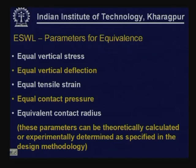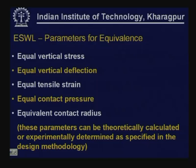The parameters of equivalence can be equal vertical stress, equal vertical deflection, equal tensile strain, equal contact pressure, or equal contact radius. These can be calculated theoretically using appropriate theory or determined experimentally. Any design methodology using an ESWL approach must specify how the ESWL is determined — what experiment or theory to use, at which location, and which parameter to calculate.